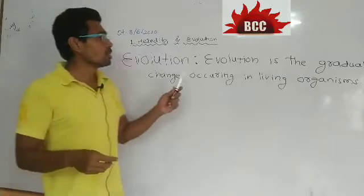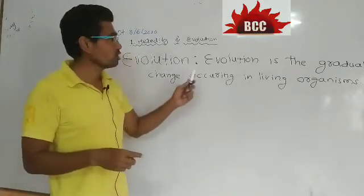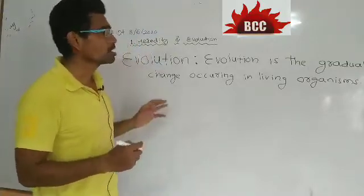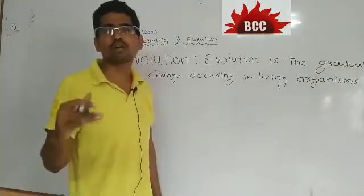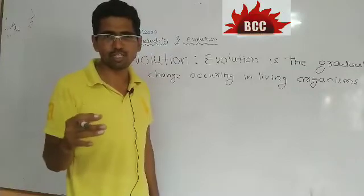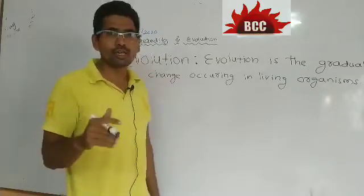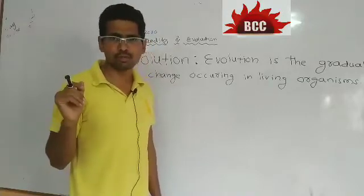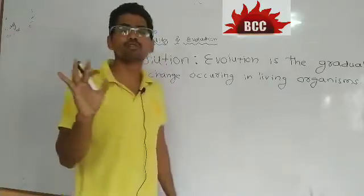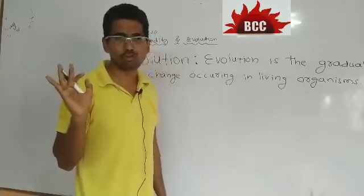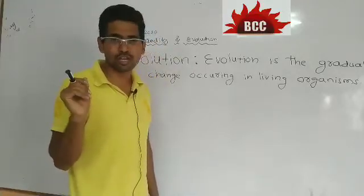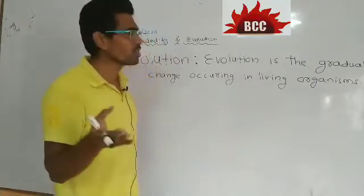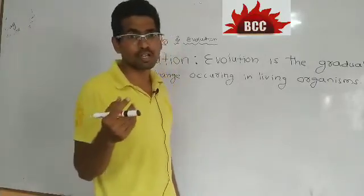Evolution is the gradual change occurring in living organisms. It is a slow and gradual process — it happens step by step over thousands and millions of years. Unlike revolution, which is a sudden change, evolution takes a very long time.